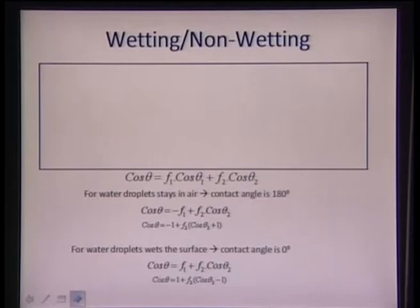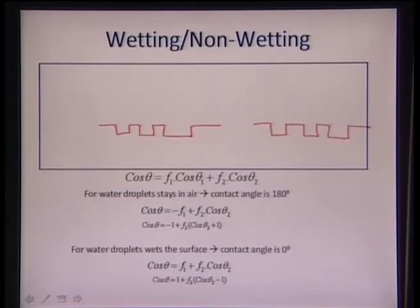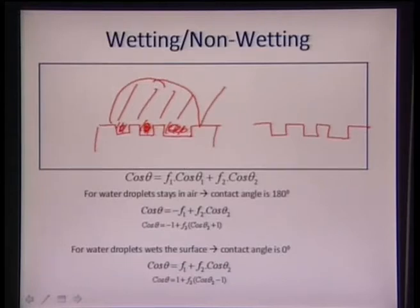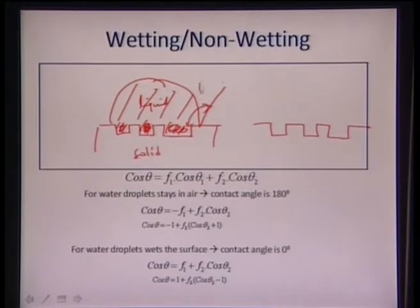Coming to what is wetting and non-wetting: if we have a rough surface and a water droplet sitting on it, the droplet might assume a shape while filling in those cavities. The water droplet takes care of filling the voids or rough grooves in the material, and this shows a certain contact angle. We have liquid, solid, and this particular angle — called the Wenzel state.